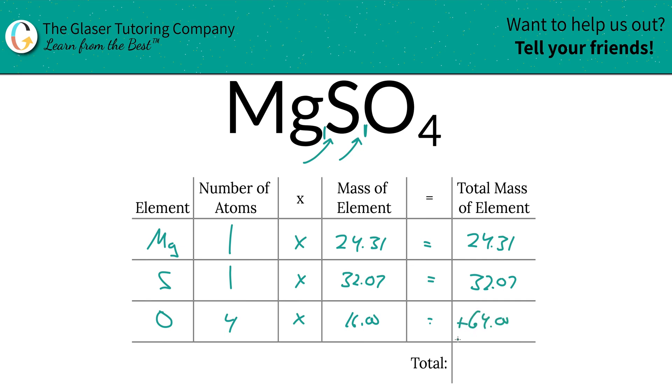So then to find the total mass of the entire compound, all you literally got to simply do is just add the column together. So that's going to be a total of 120.38. And there it is, the total mass of the compound is 120.38. And that's the first step of the process to find the percent mass.